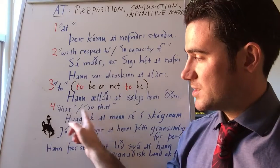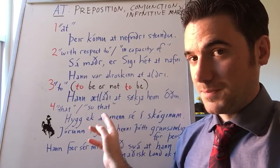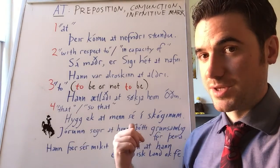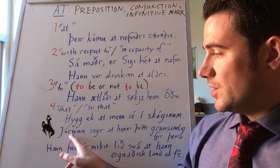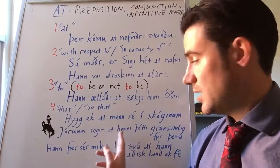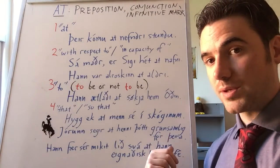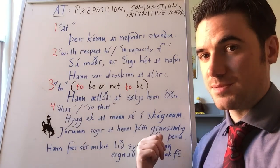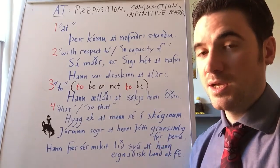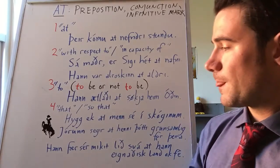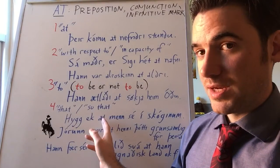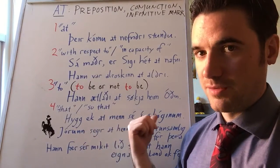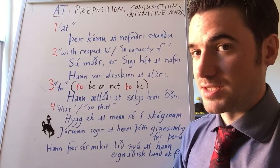Notice that since the speaker is saying they think something is potentially happening and not stating a directly known fact, the verb here is in the subjunctive. Similarly, 'Jórunn segir at henni þótti grunsamleg ferðin' — Jorunn says that to her seemed suspicious their journey; Jorunn said that their journey seemed suspicious to her. Note that in English we can actually drop the word 'that' in sentences like this, saying 'I think men are in the forest,' but in Old Norse it is obligatory.